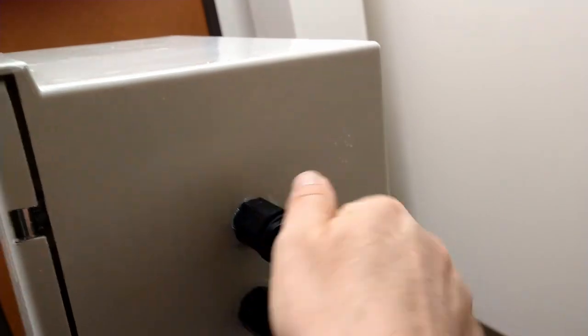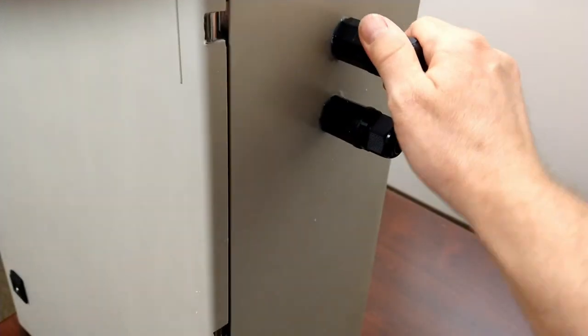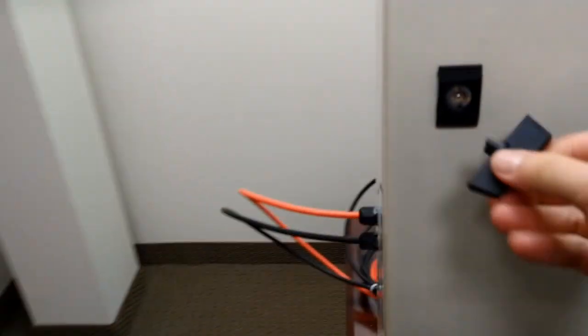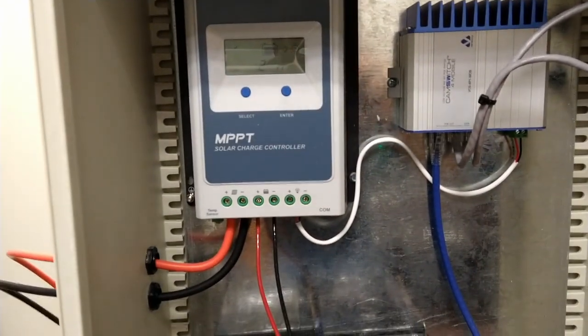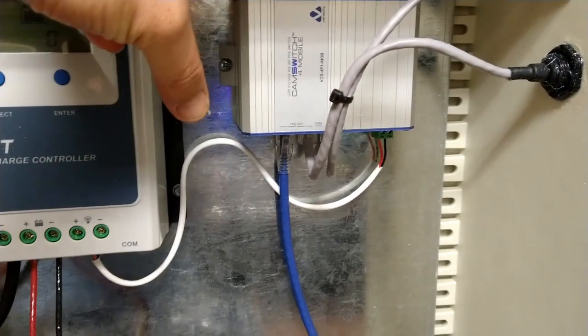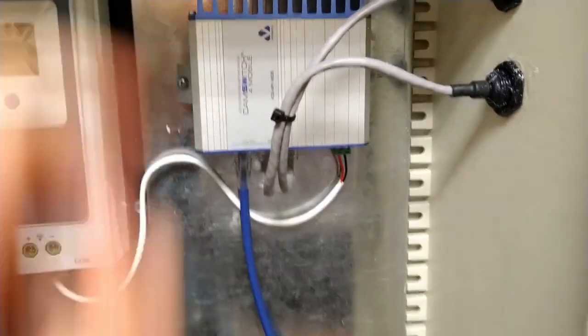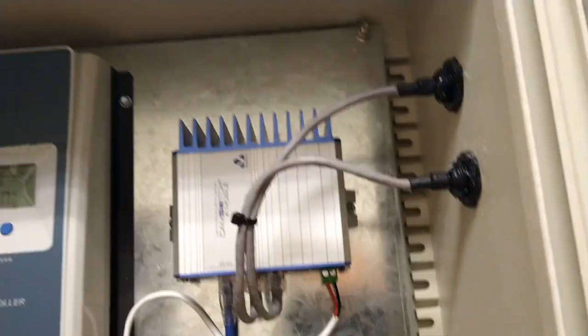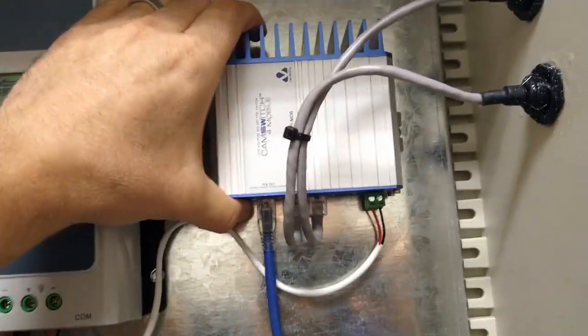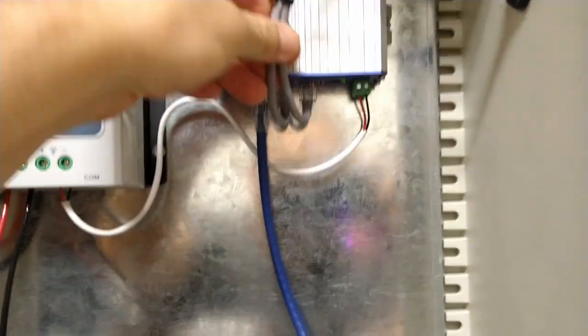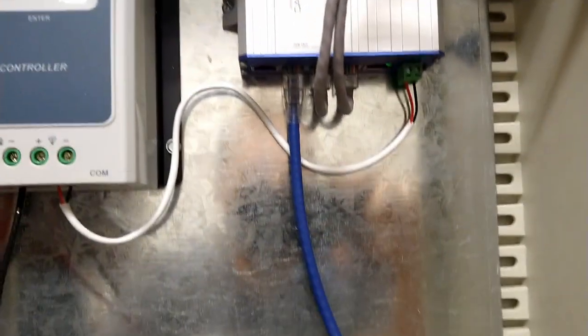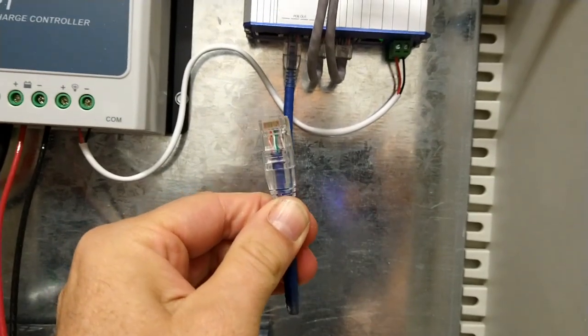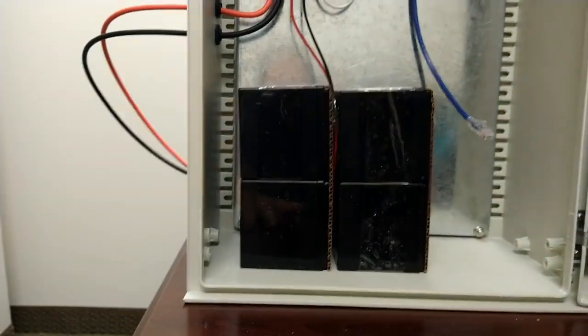We've got two waterproof glands for RJ45 ethernet connections we use to connect cameras. On the inside we've got an EP Ever 30 amp charge controller and a Cam Switch, which is a 12 or 24 volt DC power over Ethernet switch. We got two ports that are going out to our RJ45 glands.